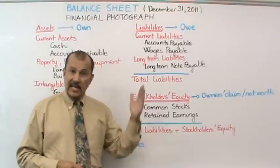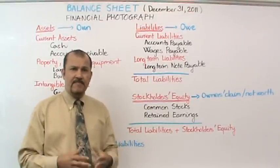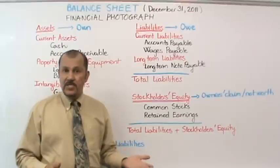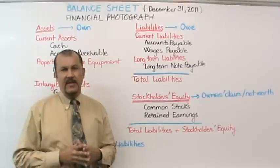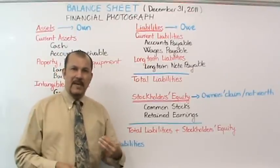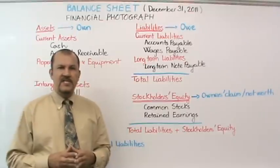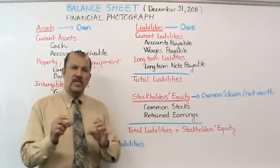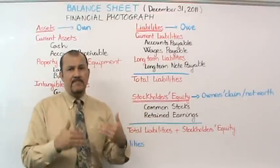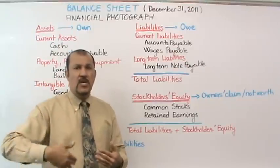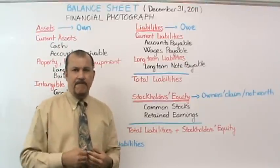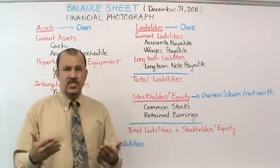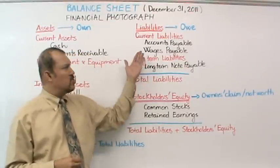Accounts payable is a liability account used when the company purchases items on account for everyday use. For example, if a company goes to an office supply store like Office Depot or Staples and buys supplies on credit, that creates an accounts payable on the company's books. Students often confuse accounts receivable and accounts payable. Accounts receivable means the company is going to receive something — that happens when they sell a product or provide a service. Accounts payable focuses on the word payable — you have to pay because you purchased something on credit.